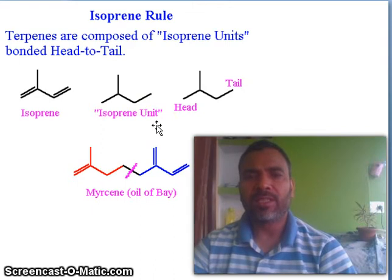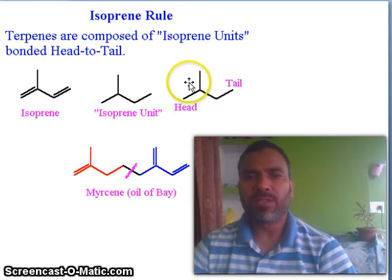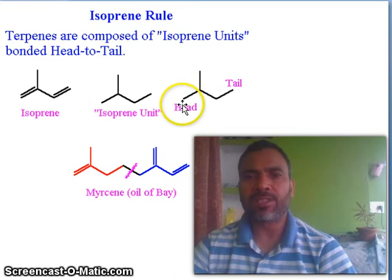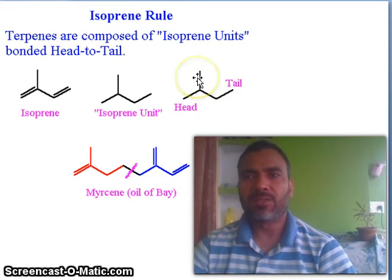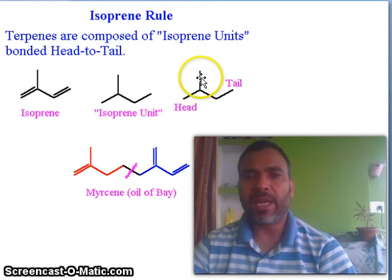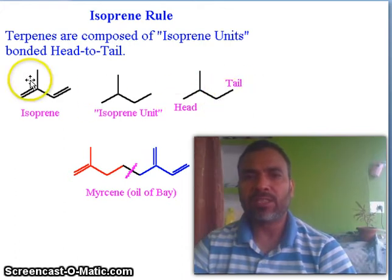If you see here these portions, you see this three-carbon portion is here and two-carbon portion here. This portion is head and this portion is tail. Look at head and tail — this is the head and this is the tail.